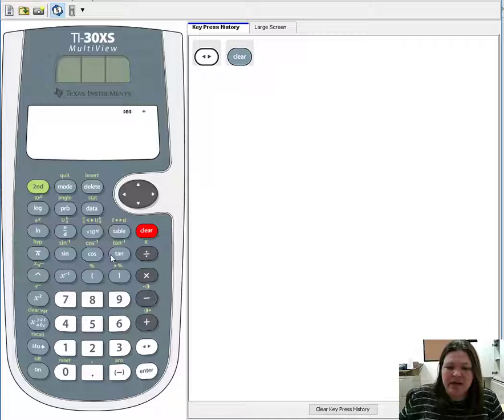Right here above the closed parentheses, I see a convert to percent. See that little arrow? Up here, I see F convert - those convert arrows go back and forth. So this one will convert between fractions and decimals, and that's in green above the table button.